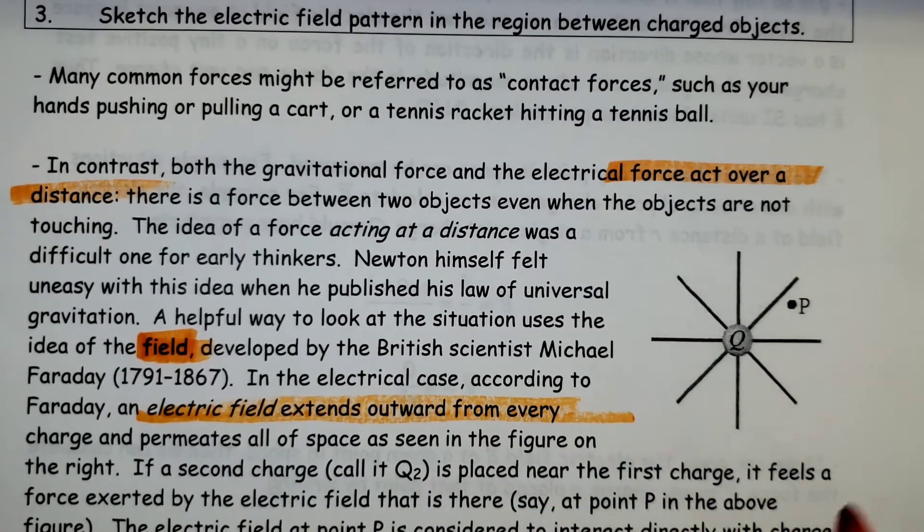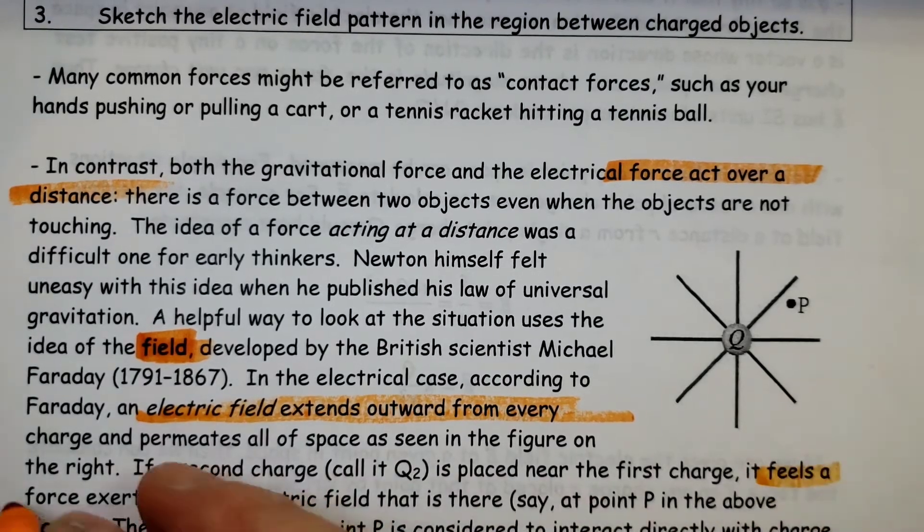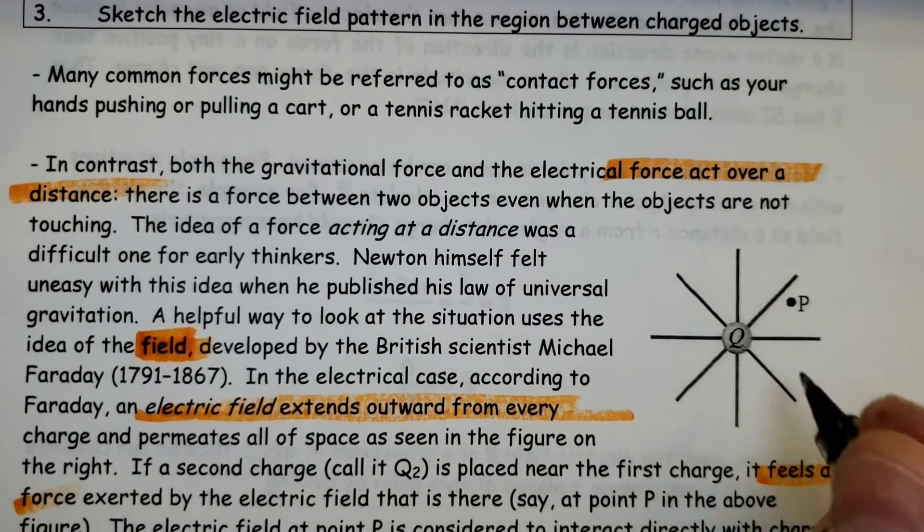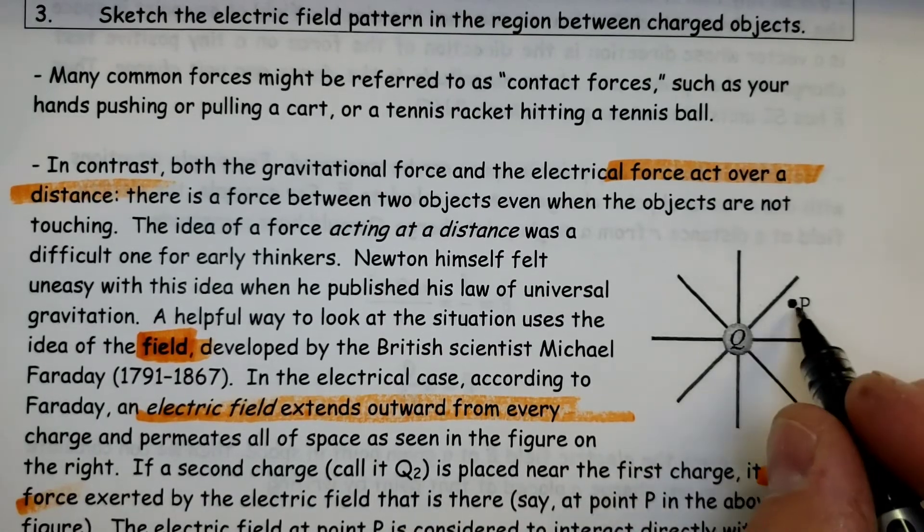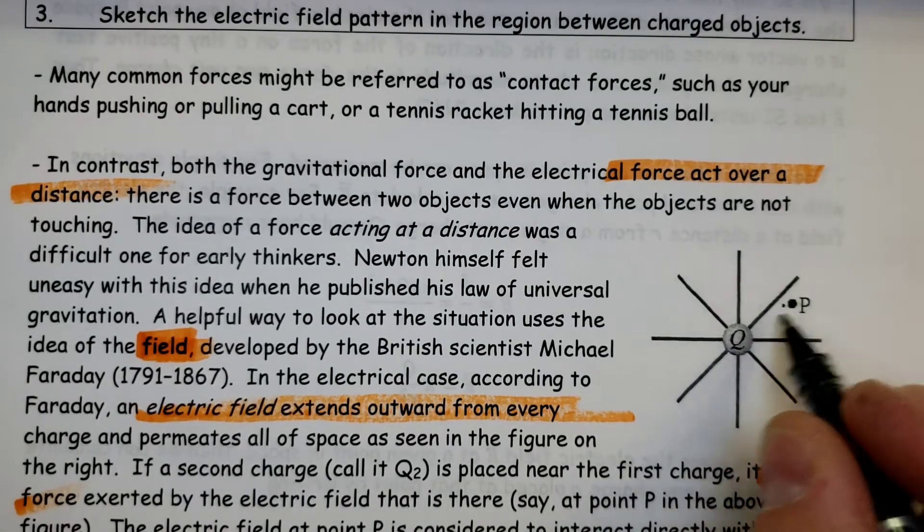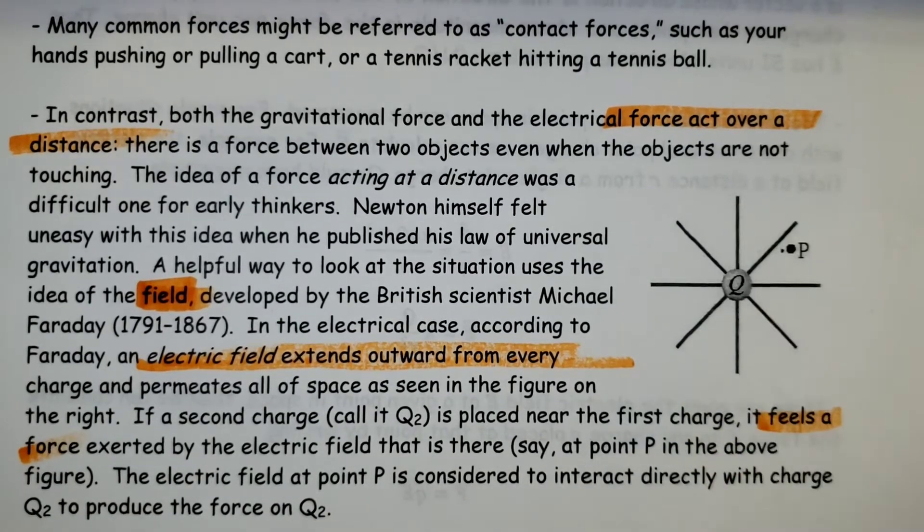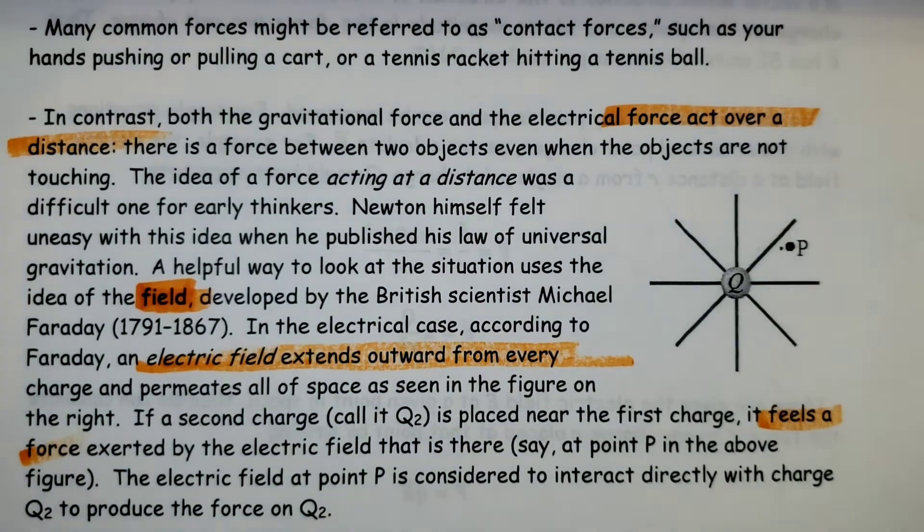As seen in this figure right here. If a second charge, call it Q2, is placed here, the first charge, it feels a force. I used P to represent the second charge. So if I place this little charge here next to this, it's going to experience either a force of attraction or repulsion, depending upon if they have a surplus or deficit of electrons.